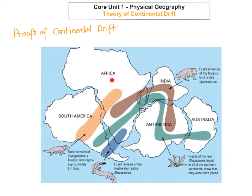There are also matching fossils from the same animals found in exact locations where the continents were once joined. The Mesosaurus is found in both South America and Africa, where they would have been joined up. There are quite a few different fossils found in different parts of the world, and some of these fossils were reptiles that were not able to swim. This obviously proves that at one point the continents must have been joined together in order for these fossils to be found on both parts of different continents.